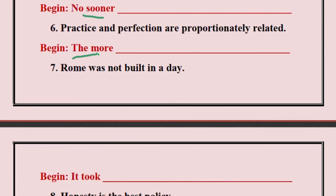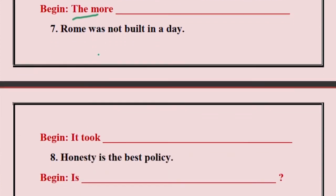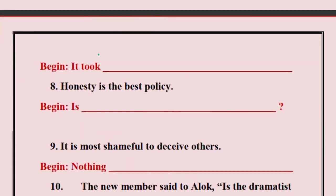Sentence number seven: Rome was not built in a day. How will you frame it if you have to start with 'it took'? It took obviously more than a day to build Rome — but don't write the word 'obviously'. Just write: It took more than a day to build Rome.